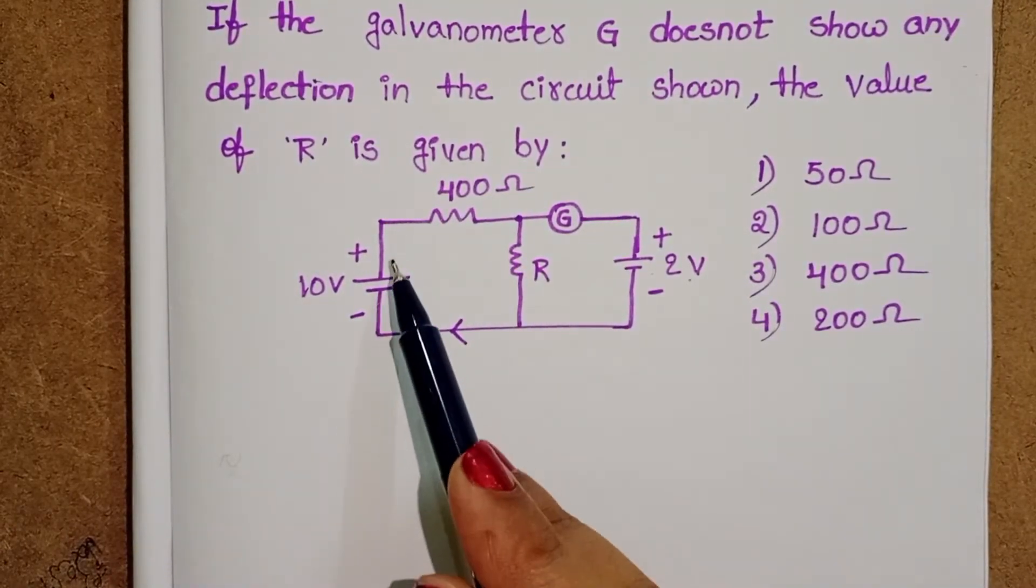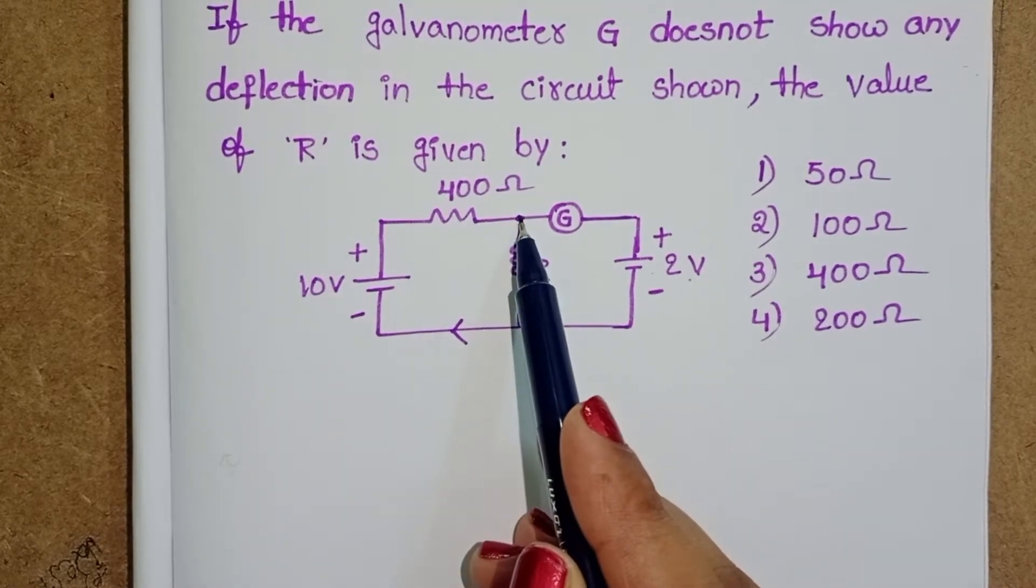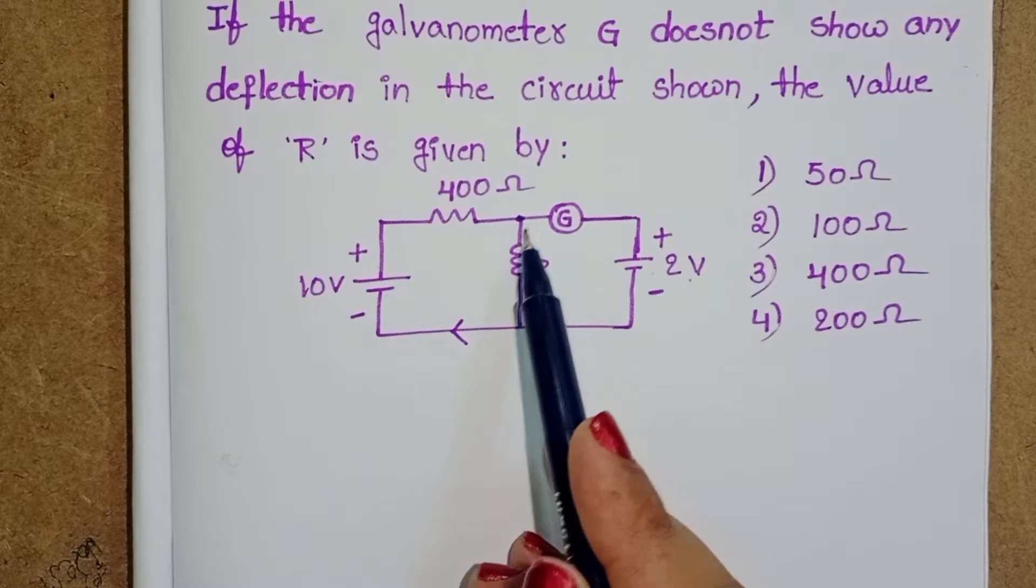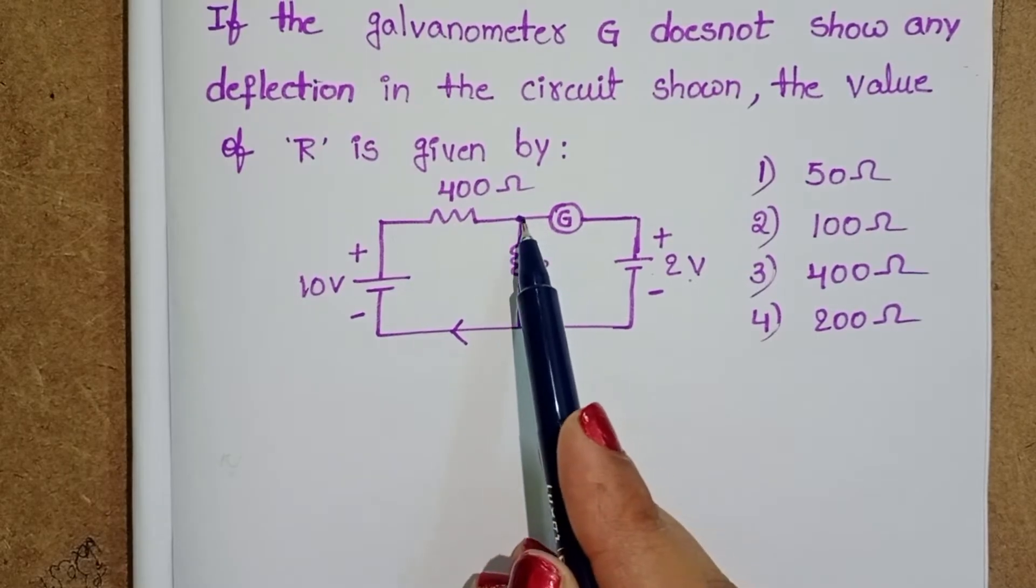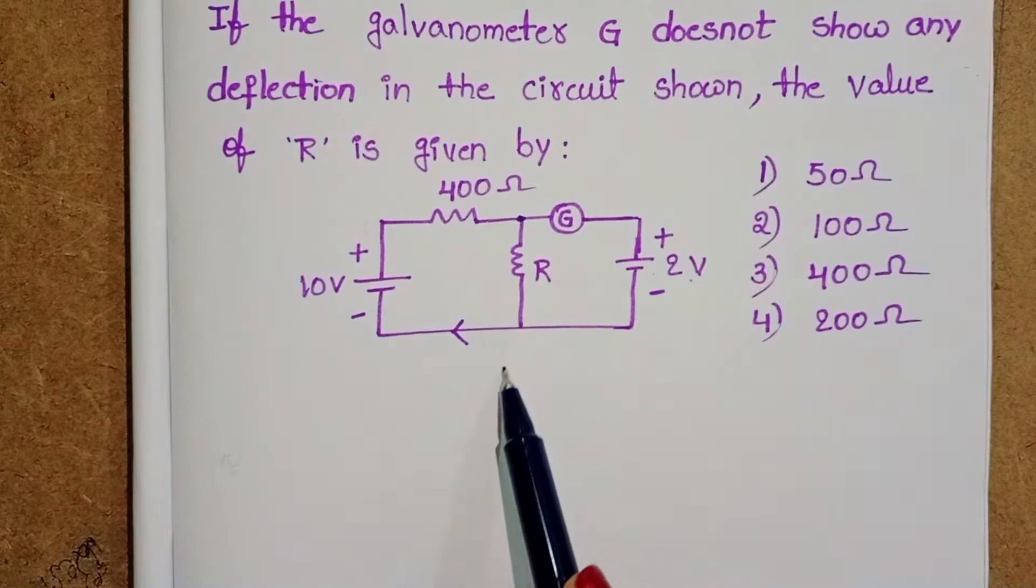When current is passing through the circuit and entering at this point, normally the current divides into two parts. I1 passing through the galvanometer and I2 passing through the resistor.